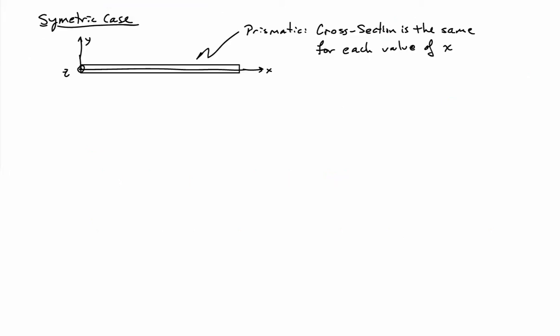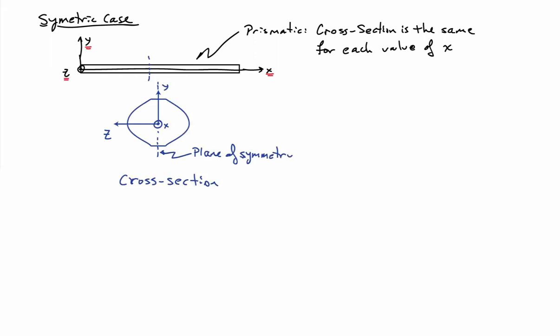We're going to stick with the symmetric case. The system is long, and the cross-sections will be prismatic, meaning that at any value of x we have the same cross-section — we'll relax that assumption later on. Looking at the system from the side, the x-axis is the long axis, y is transverse, and z comes straight out of the page. The cross-section has a vertical line of symmetry, and for now we'll assume the coordinate system is placed at the center of the cross-section.